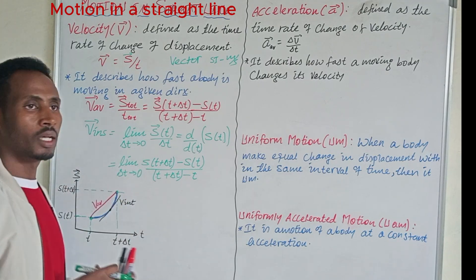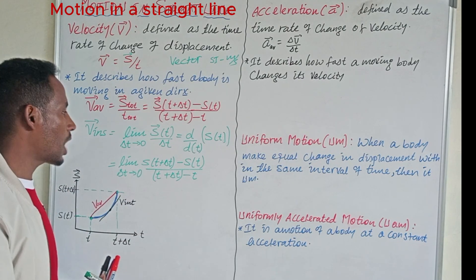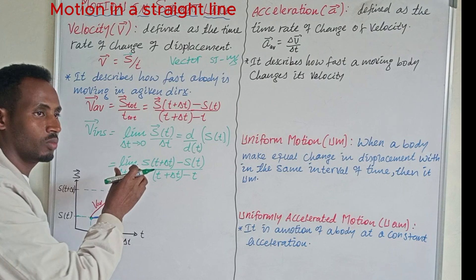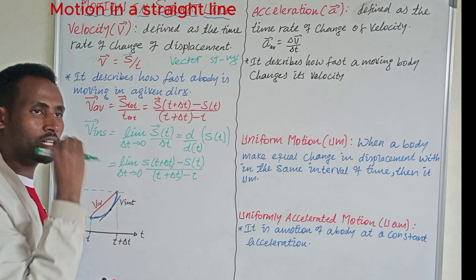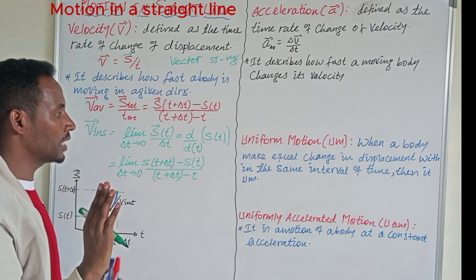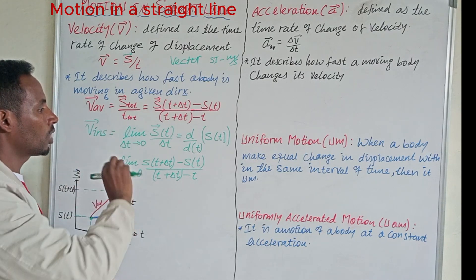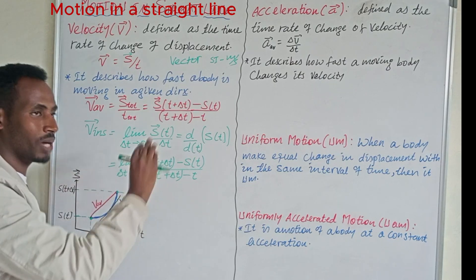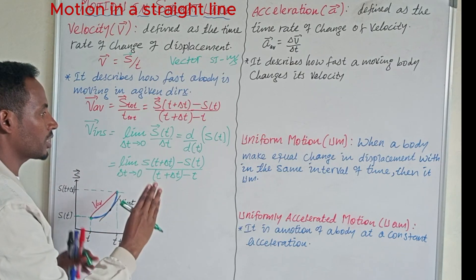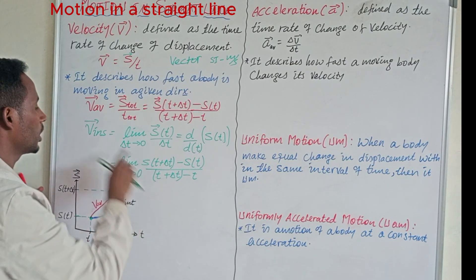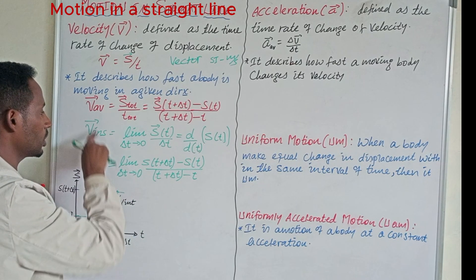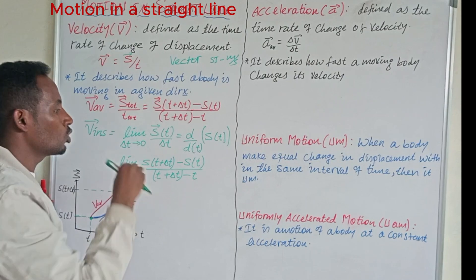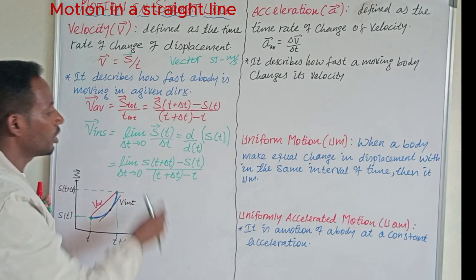This velocity can tell us detailed information about a moving object. Considering direction as a vector quantity, we look at the direction that is preferred.